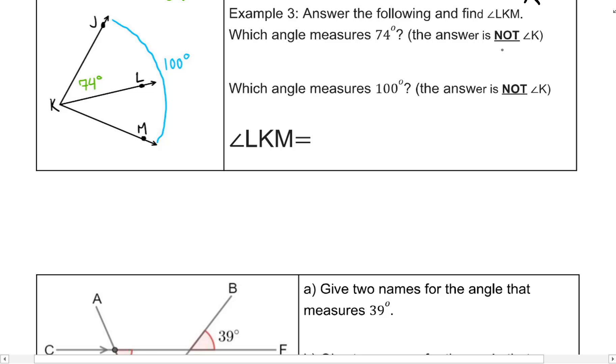Answer the following and find the measure of angle LKM. Which angle measures 74 degrees? 74 degrees can be represented by the three letters here. So angle JKL, where the vertex is always the middle letter. What's another name we could call it? Angle LKJ, so the opposite order. But again, you cannot say angle K because you don't know which angle is angle K. Is it this angle K, this angle K, or this angle K? So you have to use three letters.